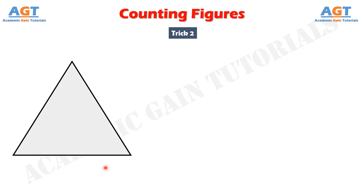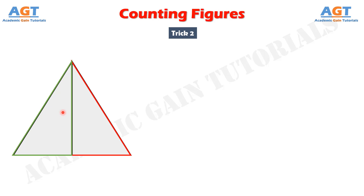There is a triangle, and we draw a line like this one over here. How many triangles are created here due to this line? Some of you might say that there are 2 triangles — this one and this one — but that's wrong. There are 3: this one, this one, and this is the third one. So there are 3 triangles.